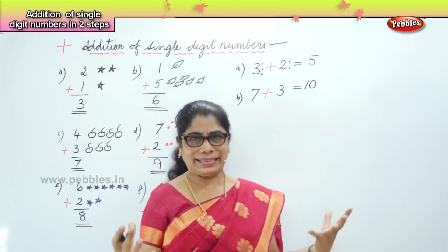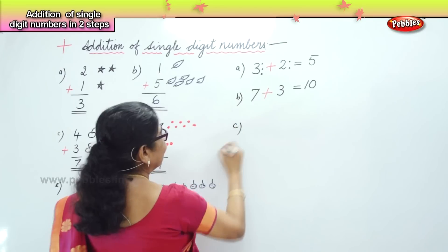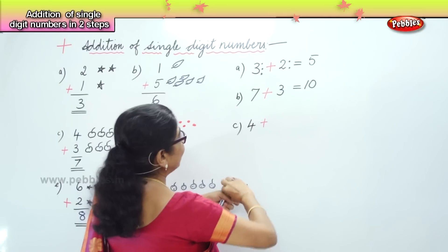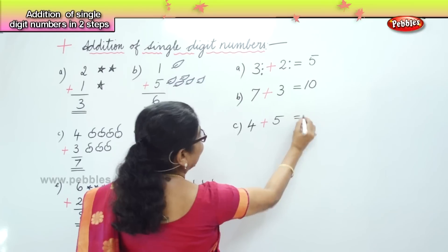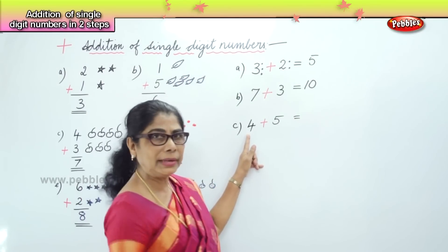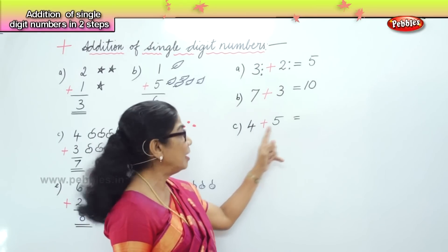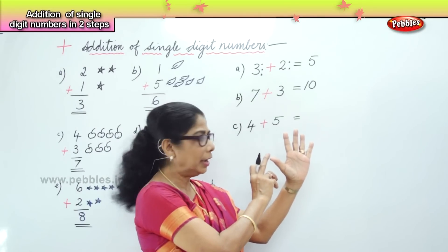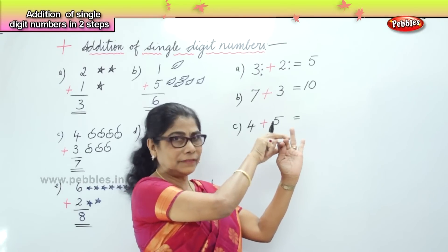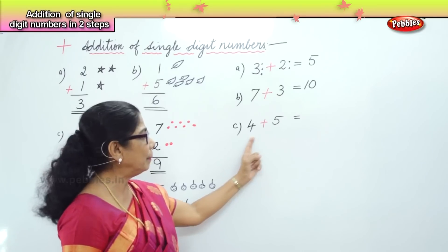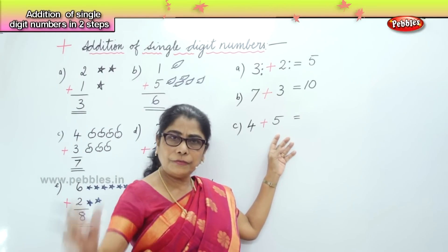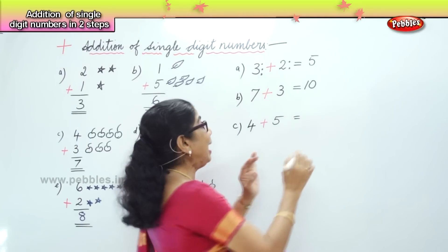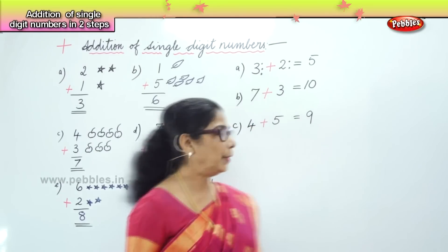It's only practice that will help us go on in maths. Let's try 4 plus 5. Put the first number 4 in the mind, and hold 5 on your fingers. After 4: 5, 6, 7, 8, 9. What is your answer? 9.